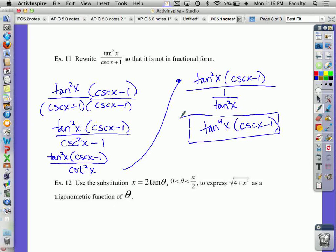Last one. Example 12 says use the substitution that x equals 2 tangent theta, where theta is in the first quadrant, that's what 0 to pi over 2 means, to express the square root of 4 plus x squared as a trigonometric function of theta. So let's start with the square root of 4 plus x squared. And it says we're going to substitute 2 tangent theta for the x.